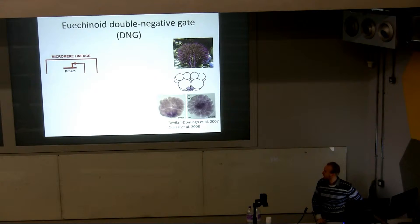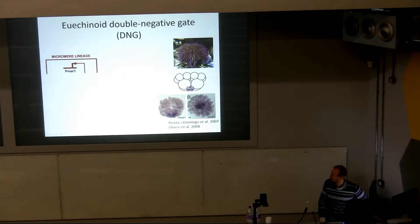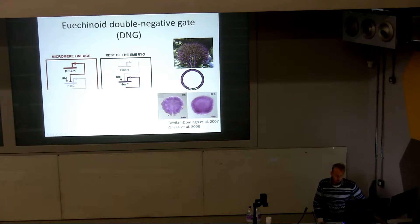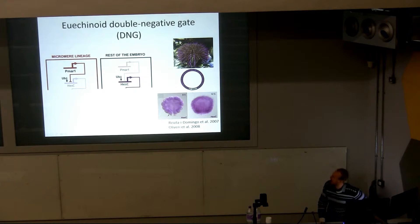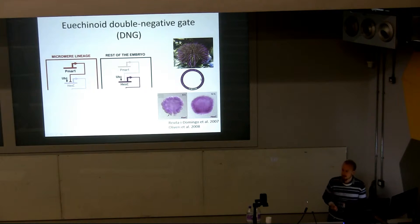I want to talk about the mechanism. In euechinoids, the way the micromeres are formed and eventually give rise to the skeleton is through what we call the double negative gate, abbreviated DNG. We have expression of the first gene, PMR1, occurring in the micromeres. In the rest of the embryo, PMR1 is not being expressed. A little later in development we have expression of HES-C. PMR1 represses HES-C, so everywhere PMR1 was expressed at the 16-cell stage is now not expressing HES-C.